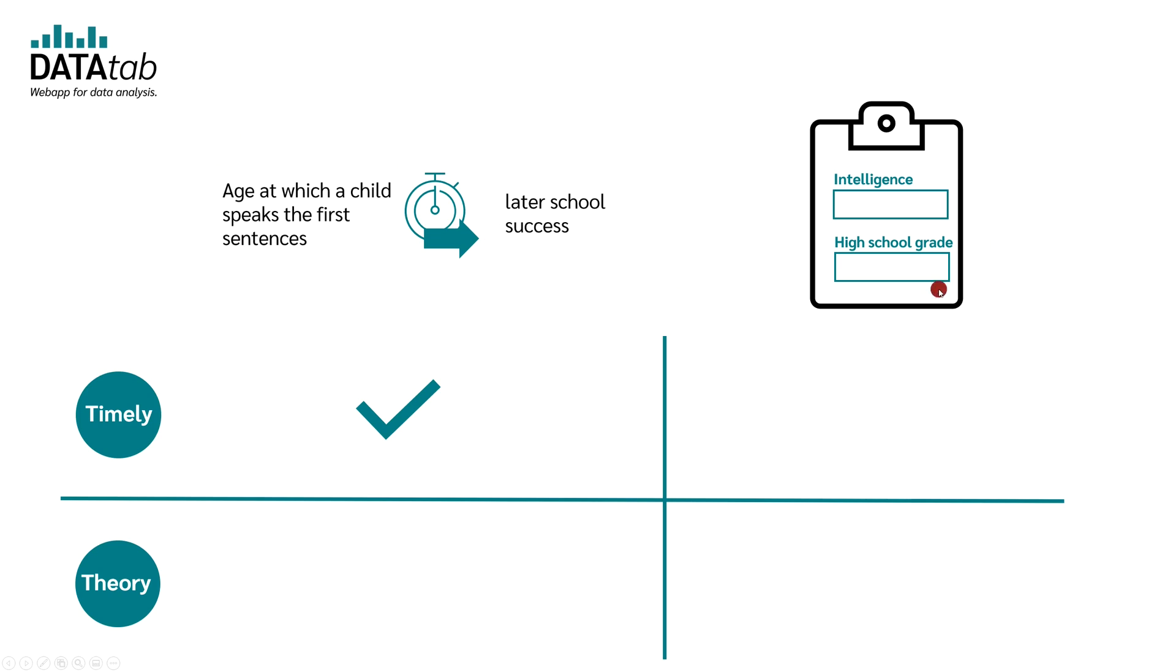On the other hand, if we measure intelligence and the high school grades at the same time, we do not have this temporal component. In order to be able to make a statement here, we have to look for a well-founded theory of which variable influences which one.